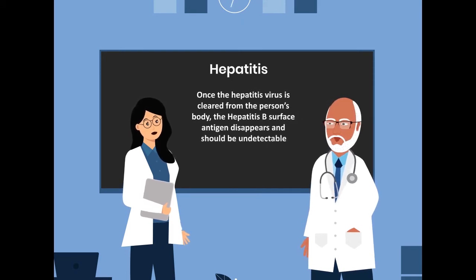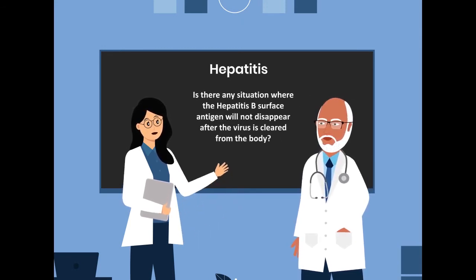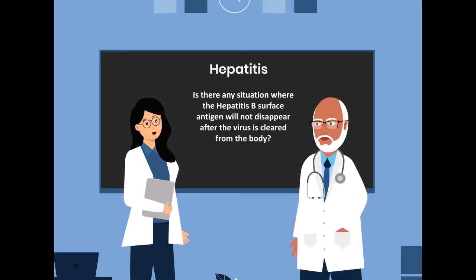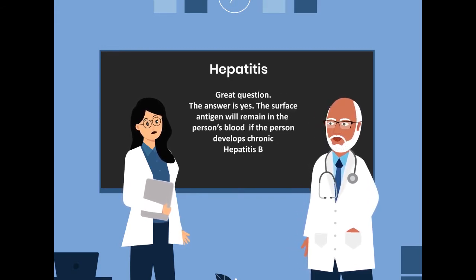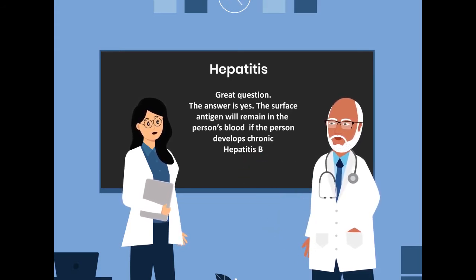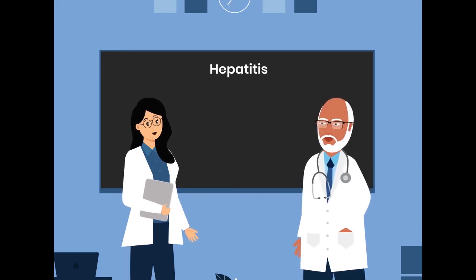What happens to Hepatitis B surface antigen after infection has occurred? Once the Hepatitis virus is cleared from the person's body, the Hepatitis B surface antigen disappears and should be undetectable. Is there any situation where the Hepatitis B surface antigen will not disappear after the virus is cleared from the body? The answer is yes. The surface antigen will remain in the person's blood if the person develops chronic Hepatitis B.